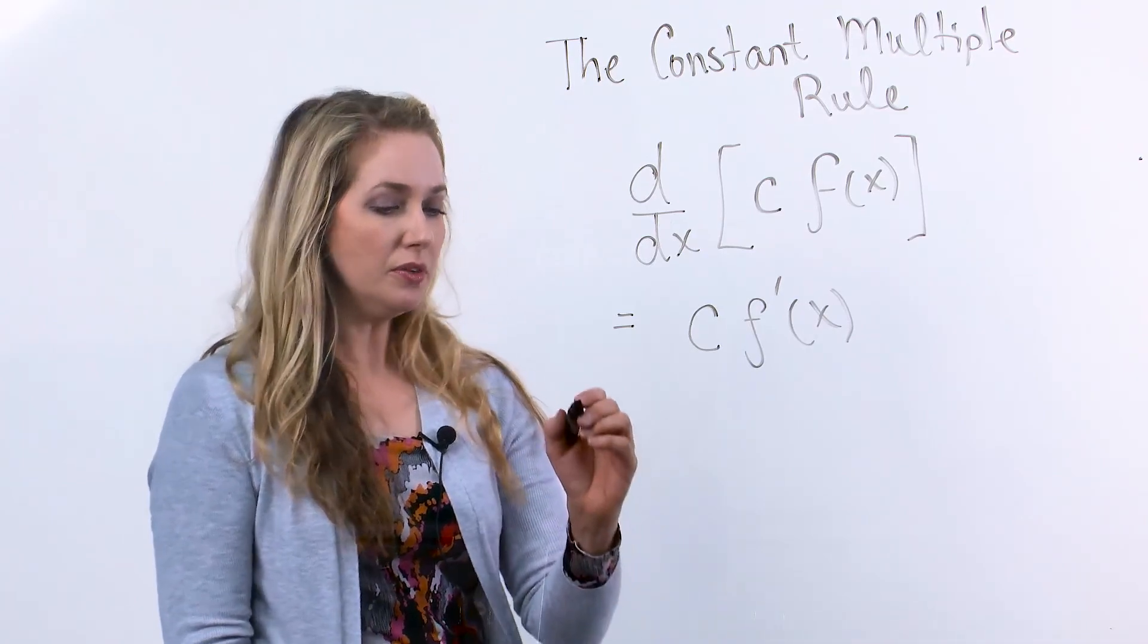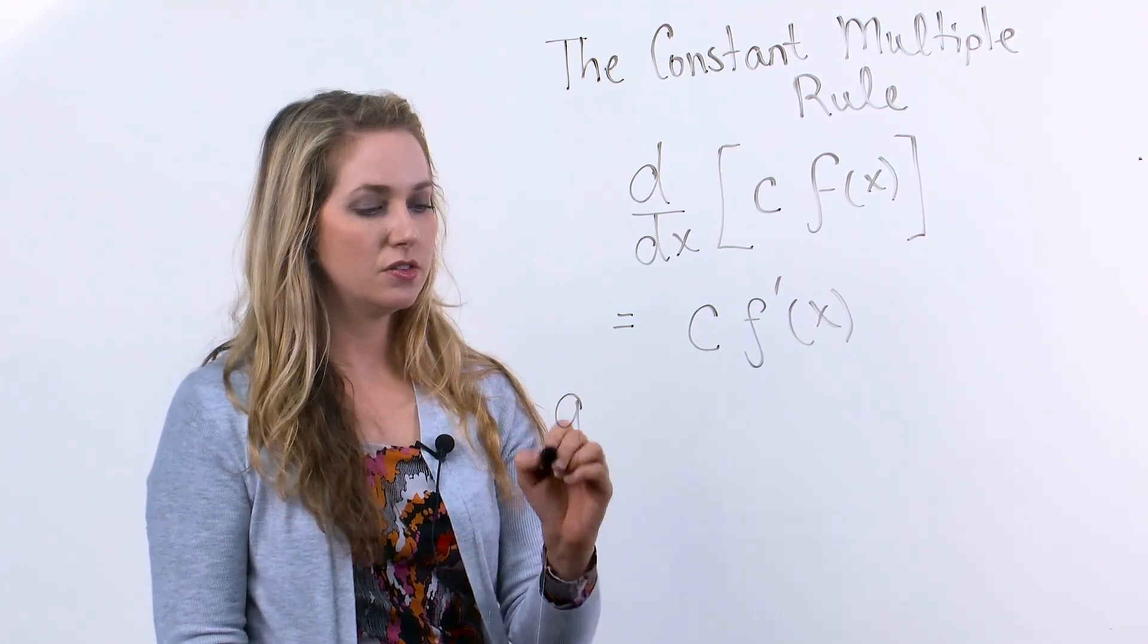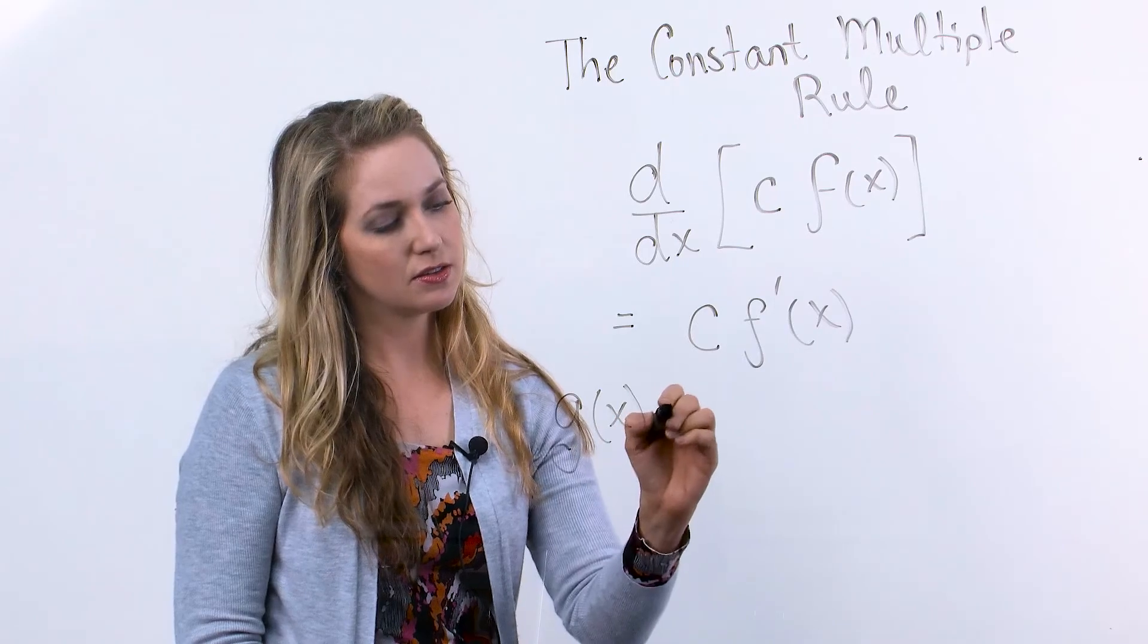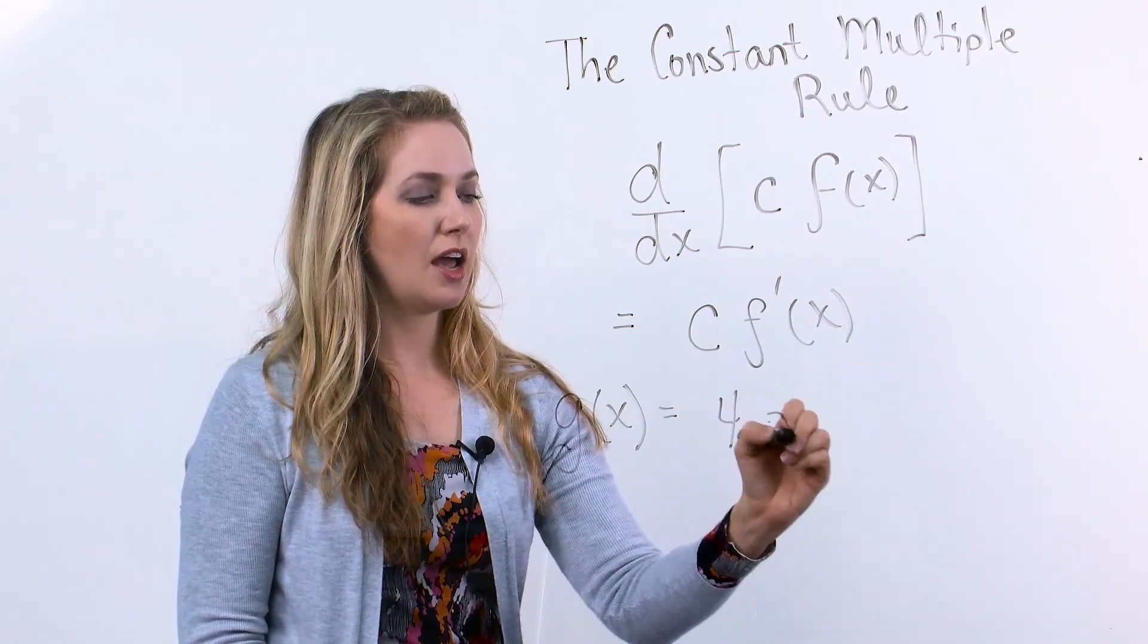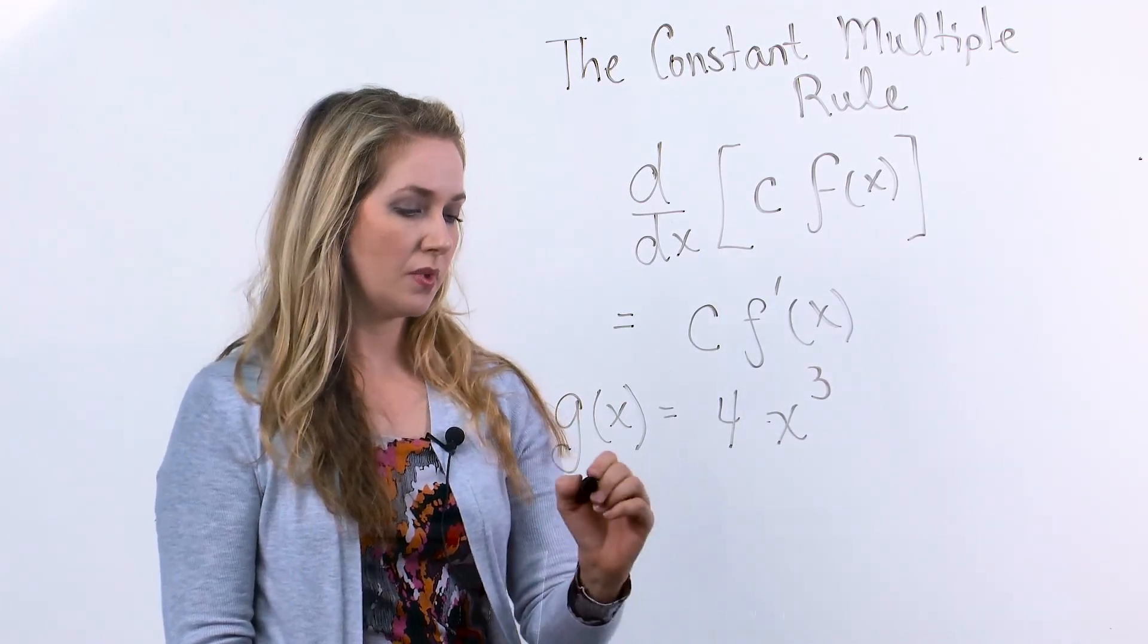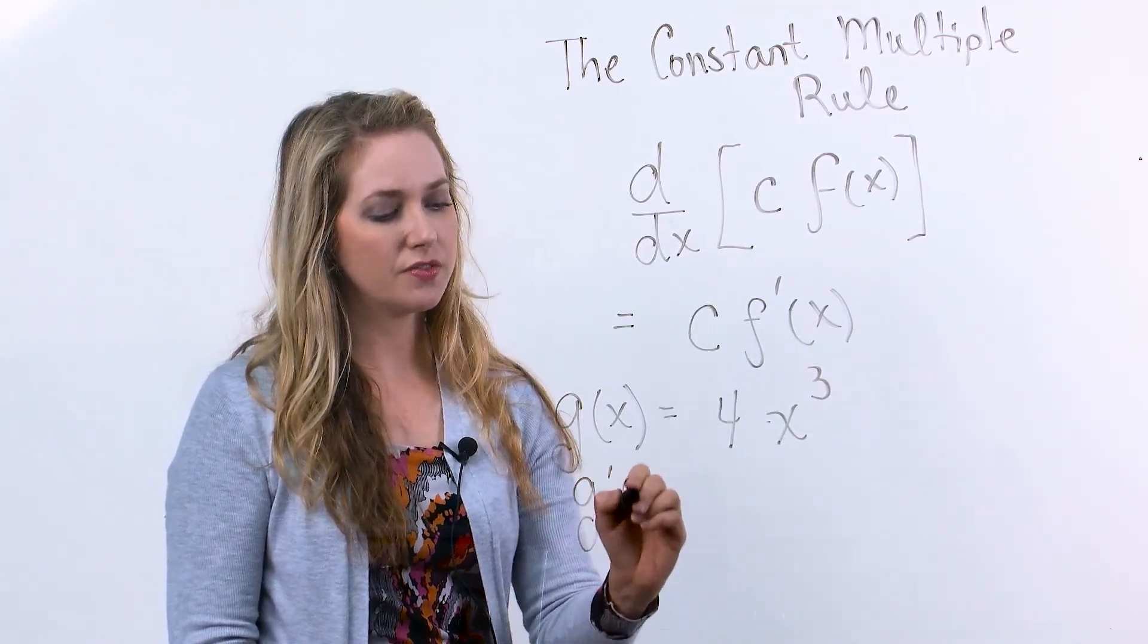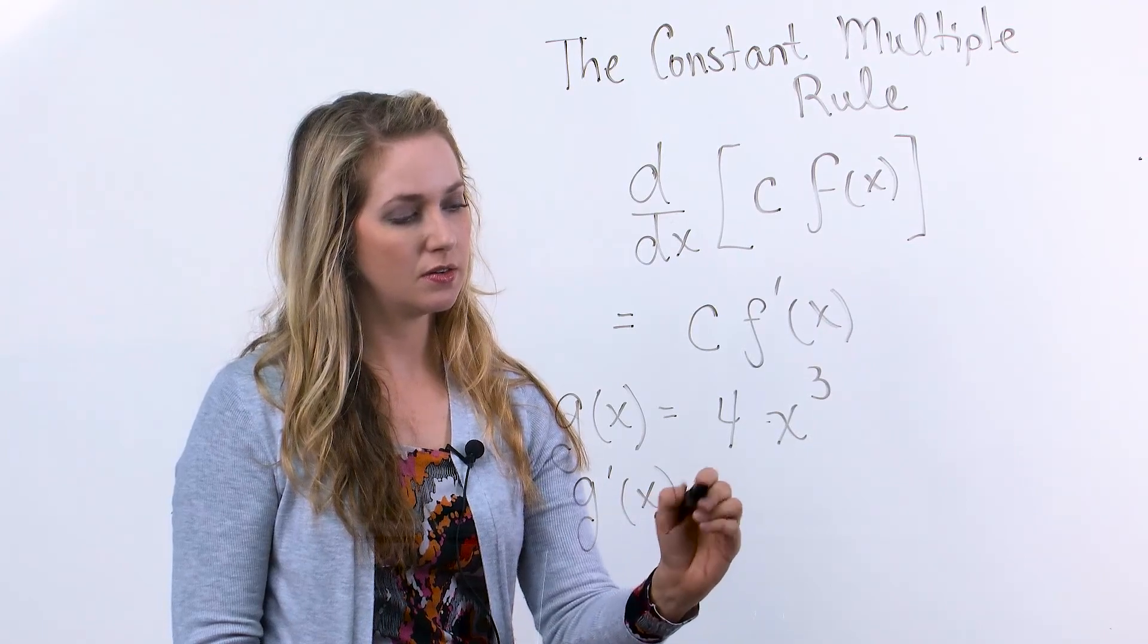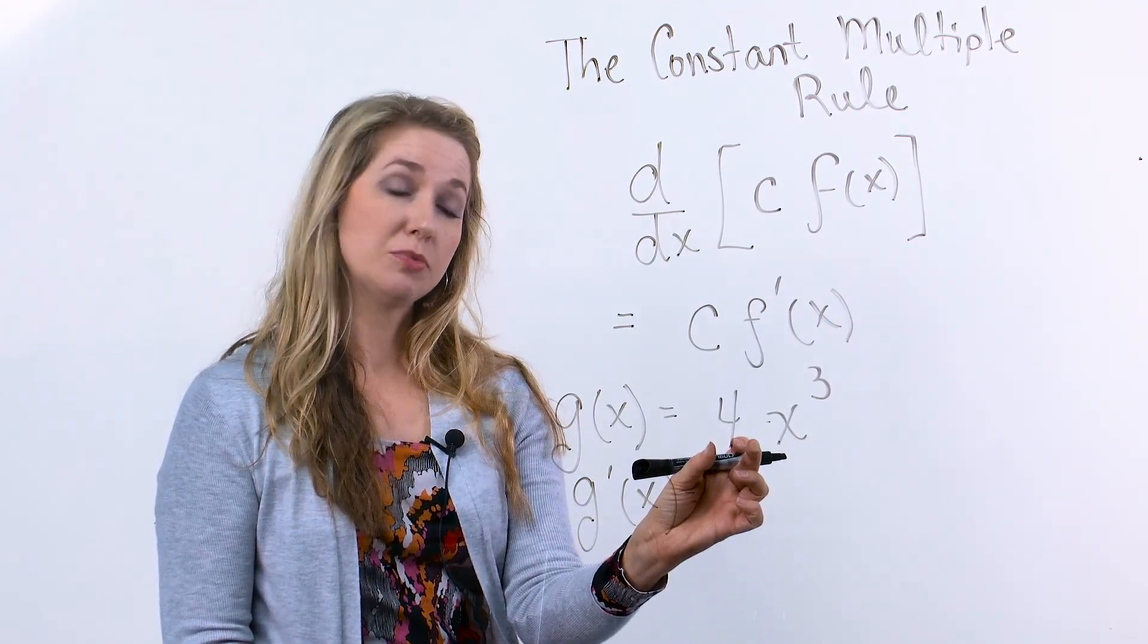So for example, if we had g of x being 4 times x cubed, the way we find the derivative of this function is the 4 is a constant multiplier.